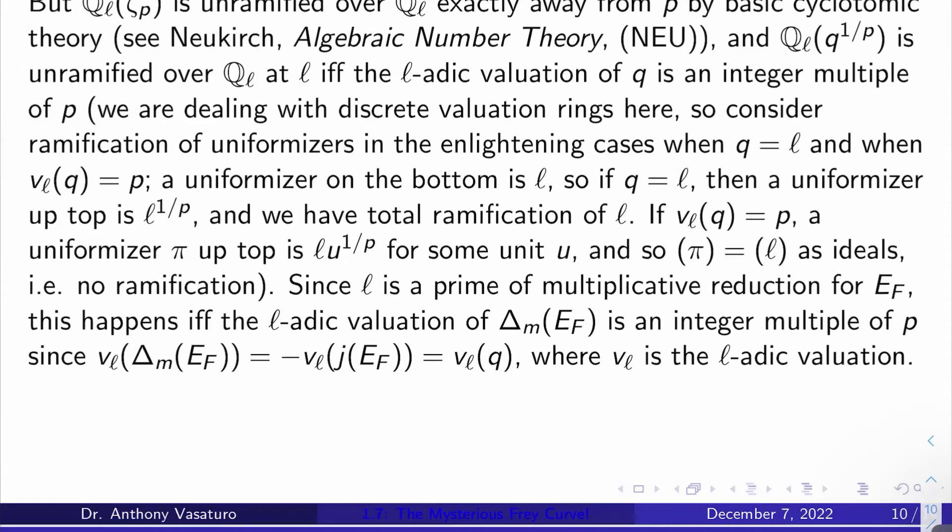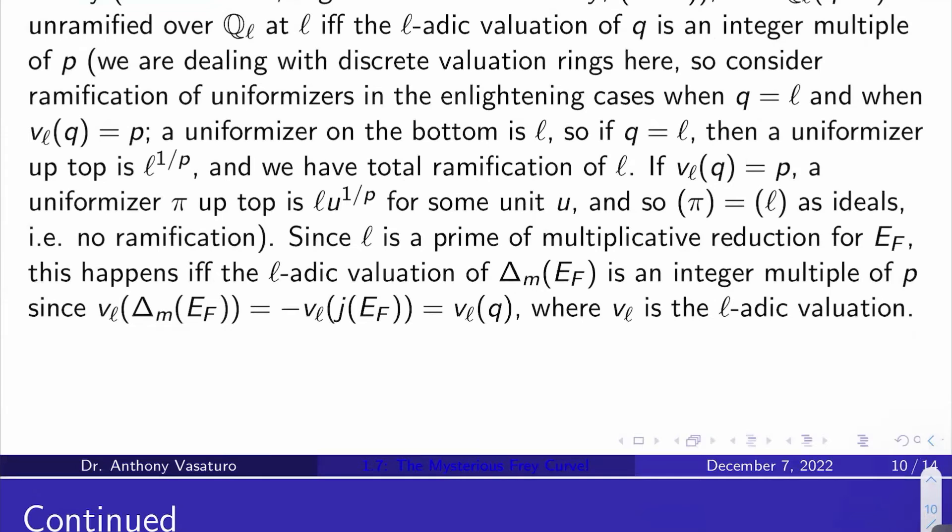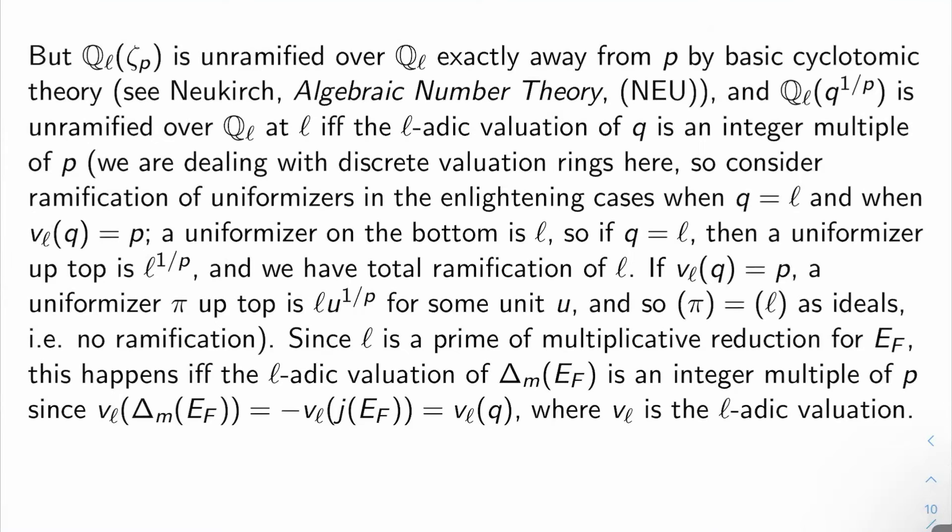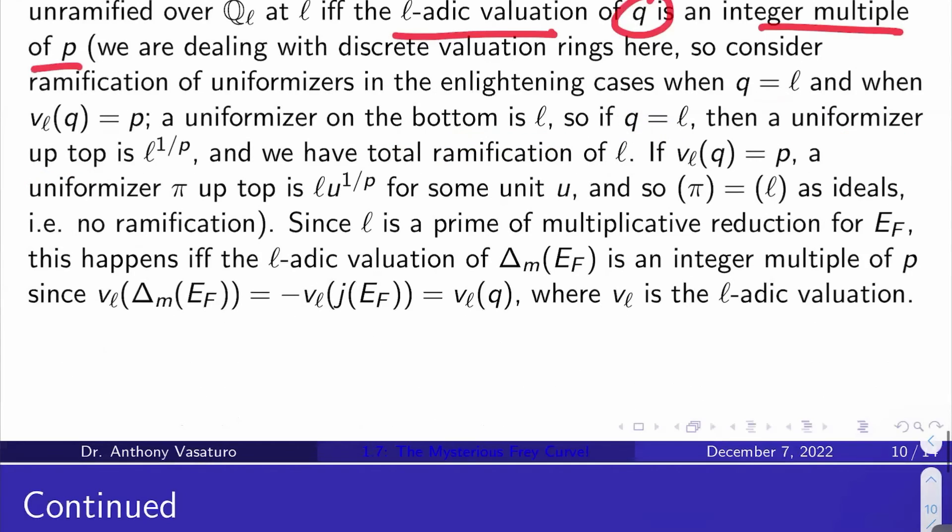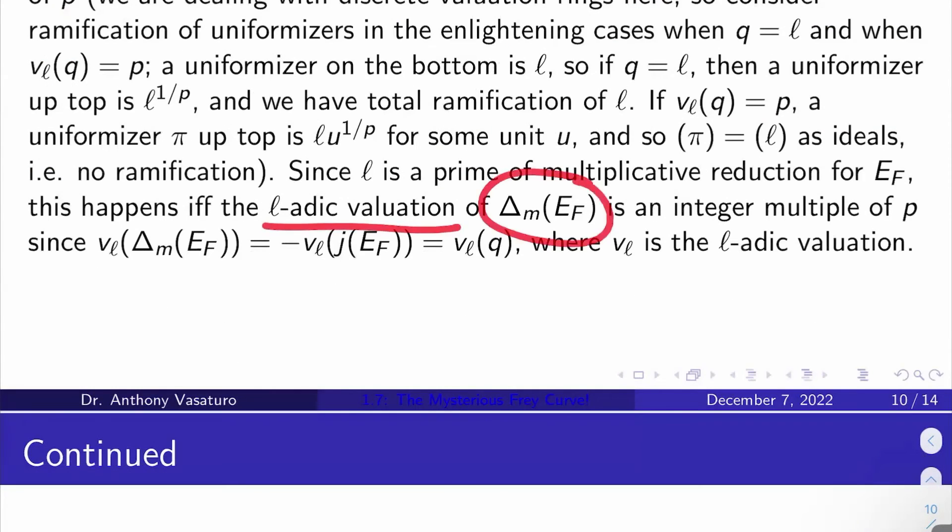Don't worry about it too much, though, because I'm okay being a little vague here, because what we're going to end up proving here about the Frey curve is going to end up only being heuristic evidence for the fact that this magical, mysterious, non-trivial solution to the Fermat equation is actually a contradiction. Now, l is a prime of multiplicative reduction for E_F. And so, when is it going to be true that the l-adic valuation of q is an integer multiple of p? That's going to happen if and only if the l-adic valuation of the minimal discriminant of E_F is an integer multiple of p. You can see that from this string of equations here.